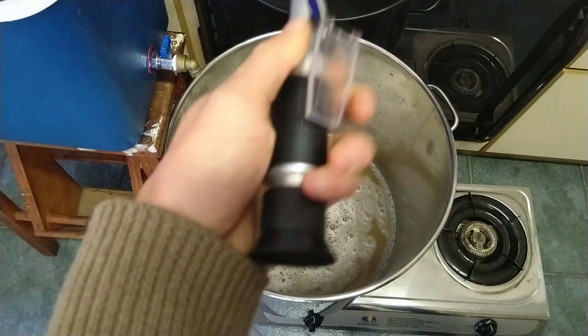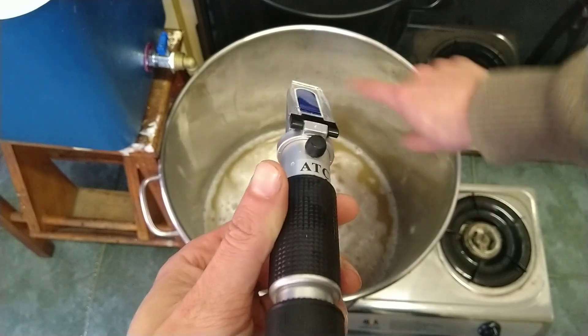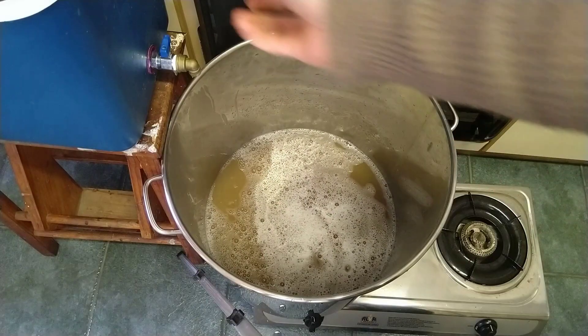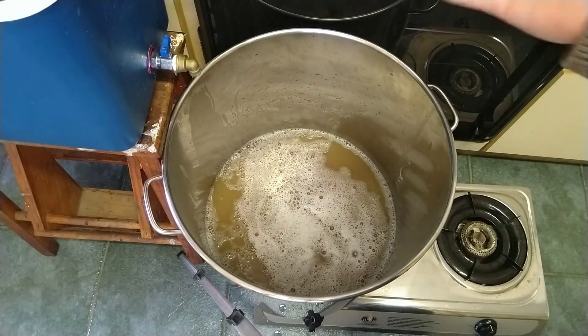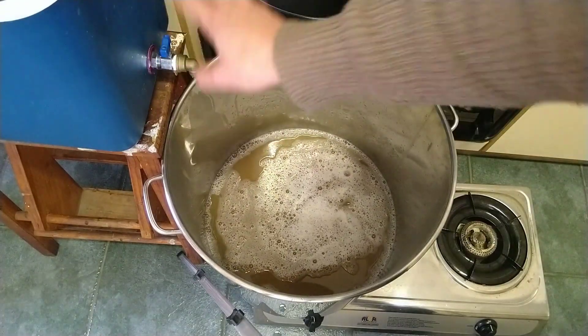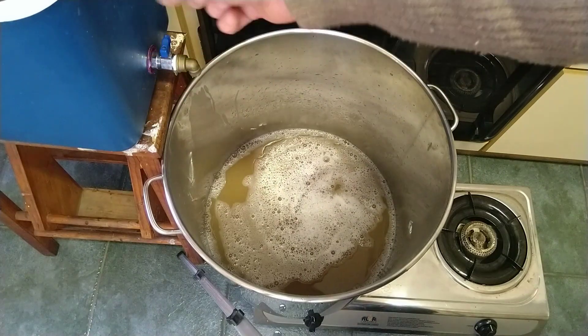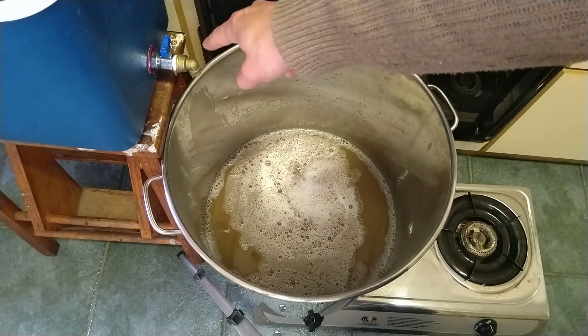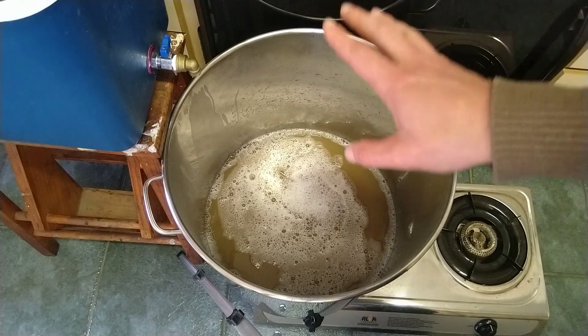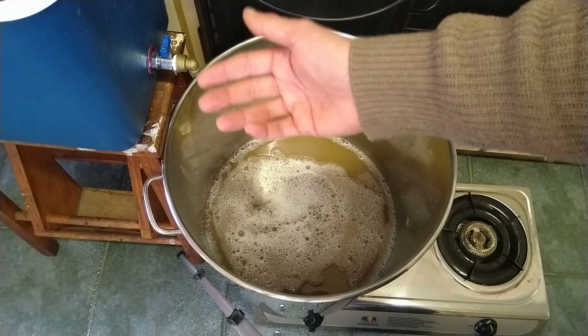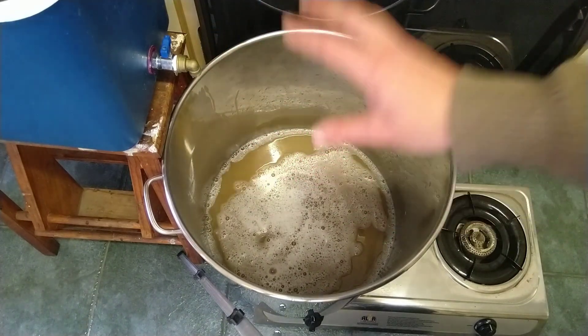We're shooting for a pre-boil gravity of about 1.036. Currently it's way higher at 1.045, so we'll keep draining, which will increase our volume. Eventually the liquid coming in will be 1.015 or 1.01, and those 10 gravity points versus 45 will pull it down quite rapidly.